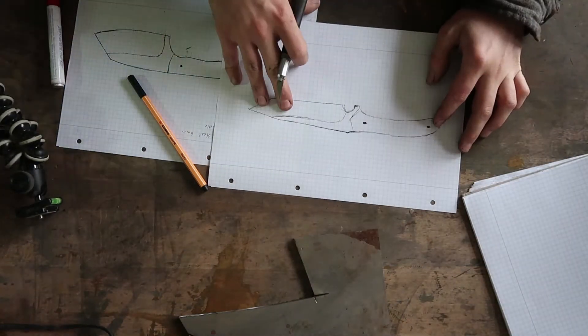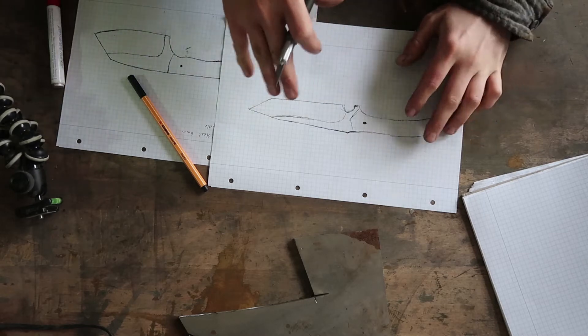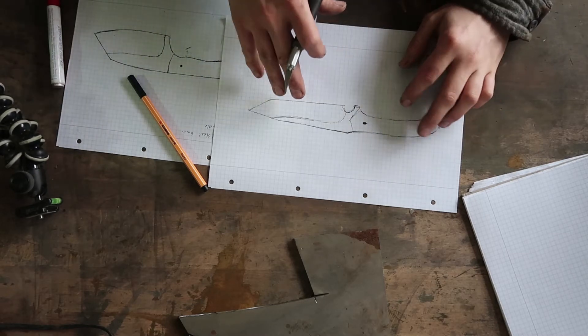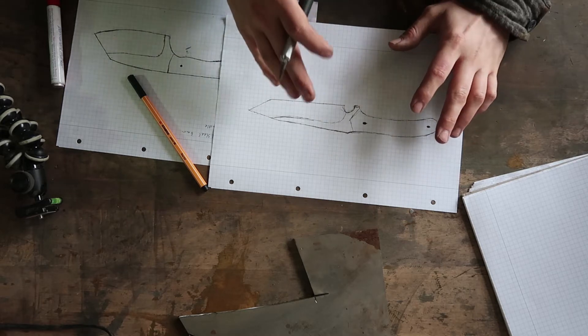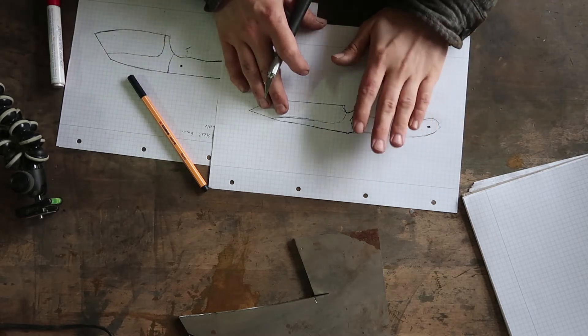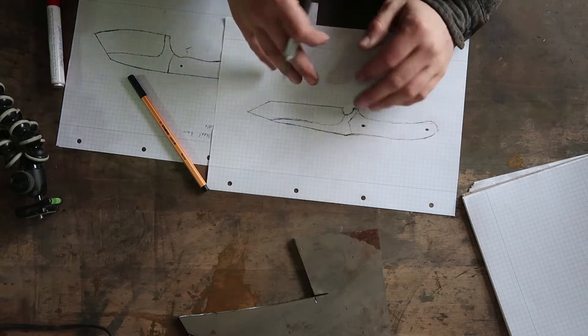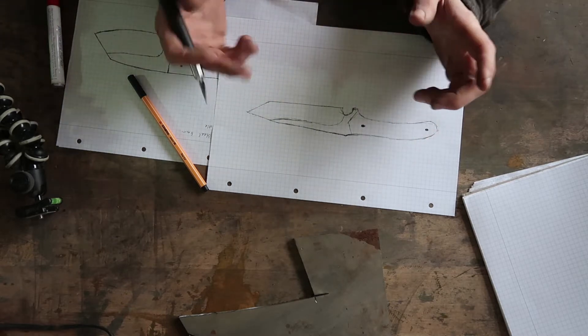The shape doesn't have to be perfect on the steel because later on I'm going to do some profiling on my belt grinder and then I will find out how the perfect shape is. So if something is wrong with the blade shape on paper I will later fix it on the belt grinder.